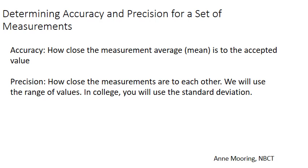Let's look at determining accuracy and precision for a set of measurements. Accuracy is how close the measurement average is to the accepted value. Precision is how close the measurements are to each other. We will use the range of values, but in college you are going to use standard deviation.